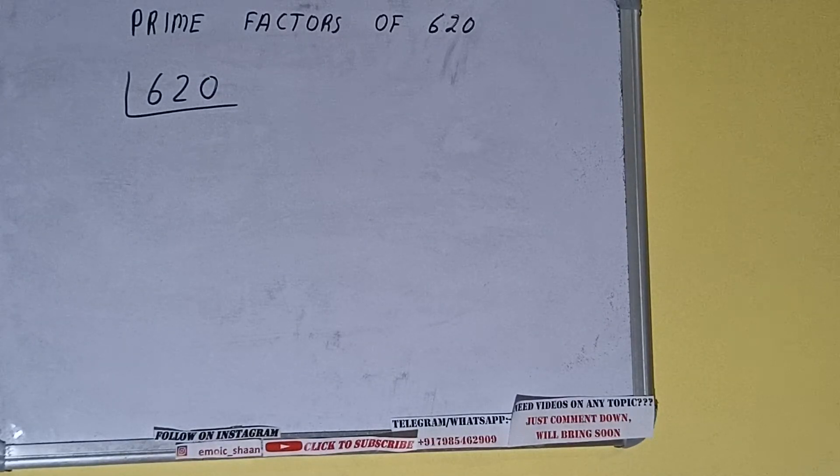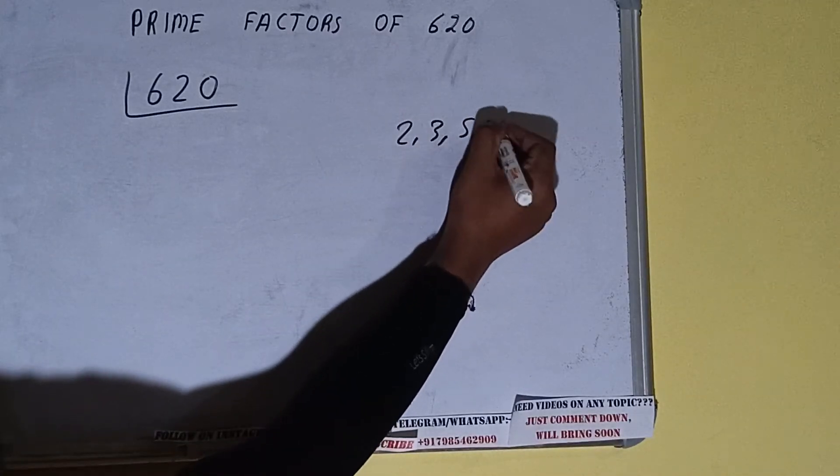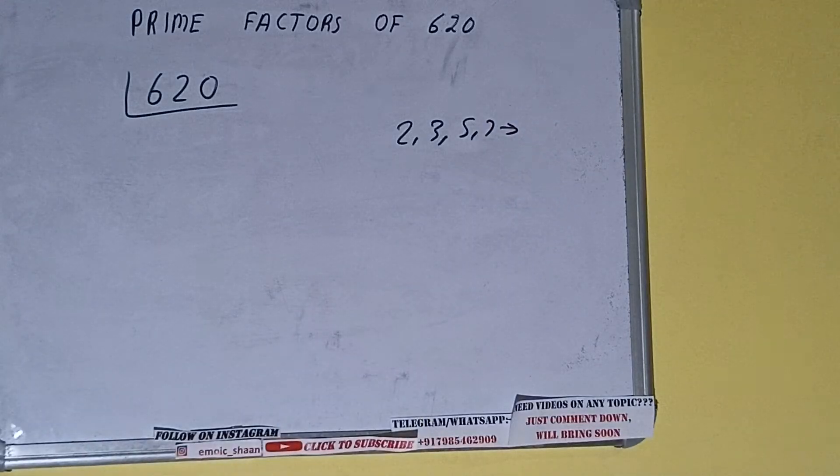So prime numbers are numbers that are divisible by 1 and the number itself, like 2, 3, 5, 7, and so on. Alright.